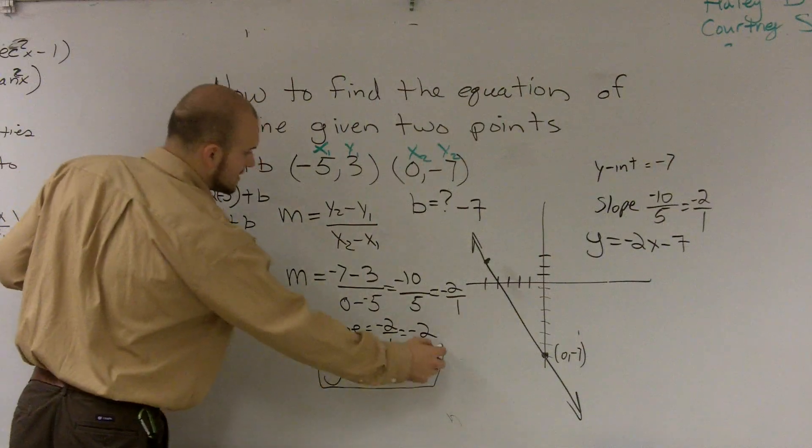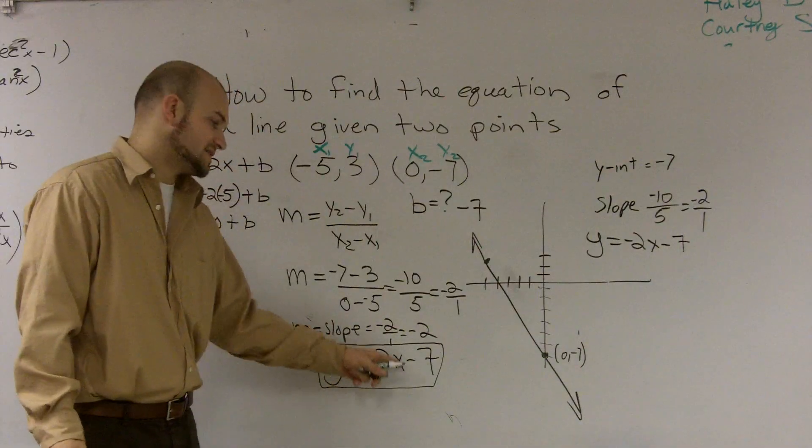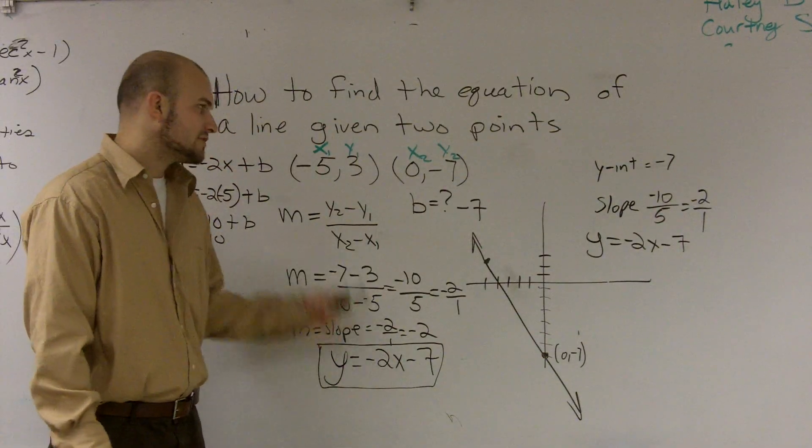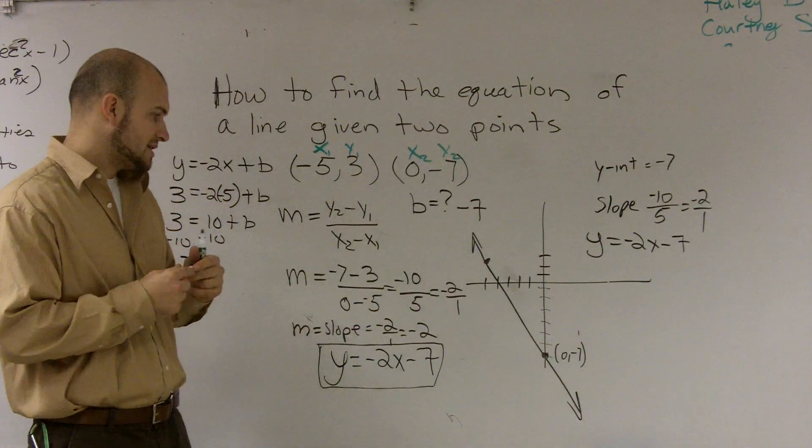Notice my equation, it still has an x and a y, because, remember, a line is an infinite set of points. It's an infinite set of x's and y's. However, the slope and the y-intercept are always going to remain the same. So that's why we write our equation in that format.